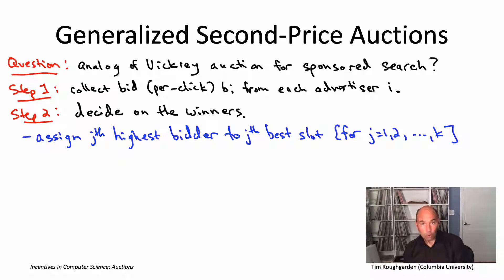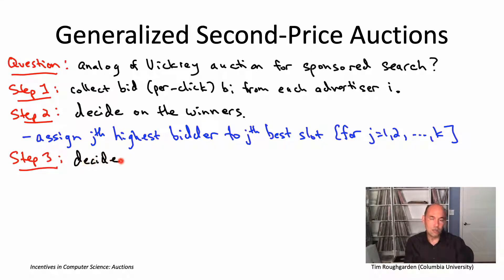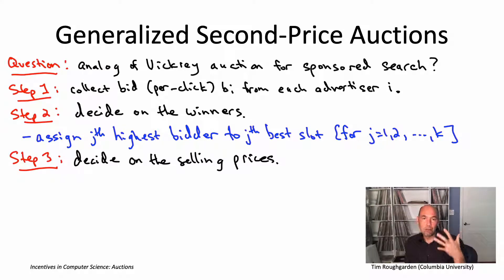In a single item auction, if all I told you was that the highest bidder wins and I asked you if it's a truthful auction, you'd say it depends. If you're charging the second highest bid, then yes, it's a truthful auction. If you're charging the winner their own bid — the highest bid — then it's not a truthful auction. Same thing here: to talk about whether this auction is going to be truthful, we need to say what are we charging the winners. So the question is, what would be the analog of the Vickrey auction's clever idea of charging the winner the second highest bid in this more general sponsored search setting with K slots?